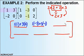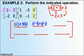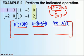Now I go to row 1, column 3 — I move my color strip over to column 3. First times first: 1 times 0. Second times second: 3 times 2. Add them together. And now I'm done with that first row.